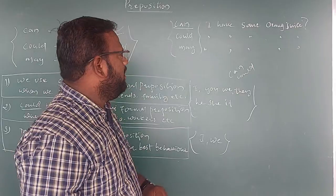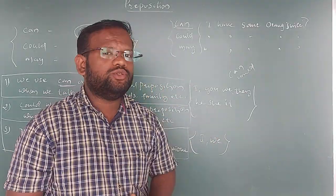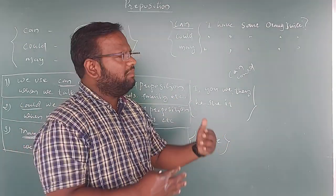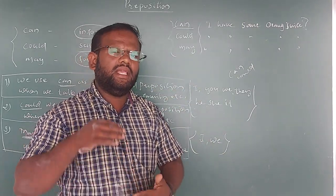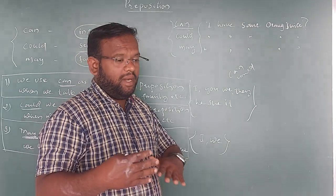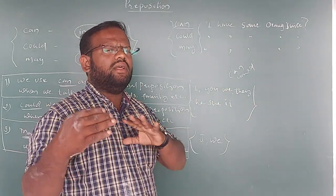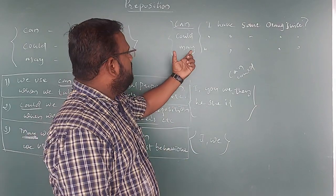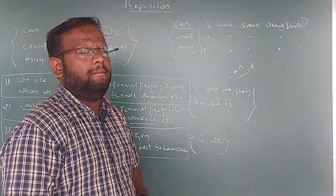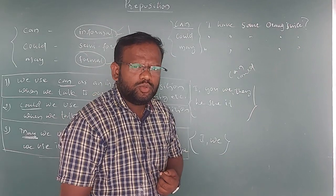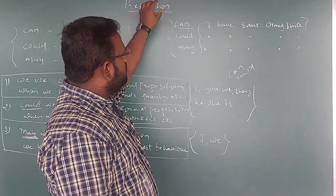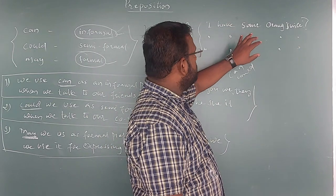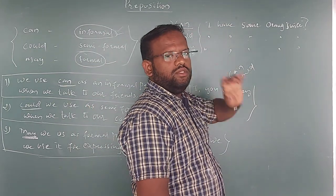With may — 'May I have some juice?' — we are asking a respected person, someone of higher position or great respect in society. We are being maximally polite. So the three forms together are: 'Can I have some orange juice?' (informal, with family/friends), 'Could I have some orange juice?' (semi-formal, with co-workers), and 'May I have some orange juice?' (formal, with elders/officials).